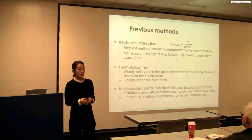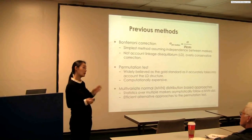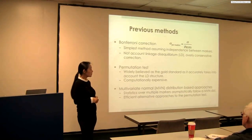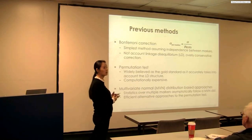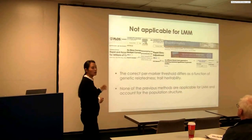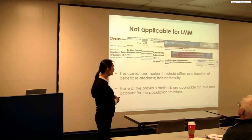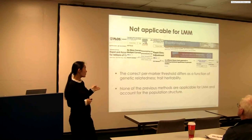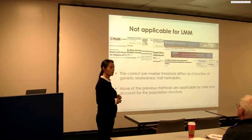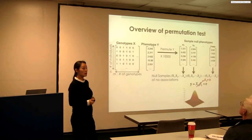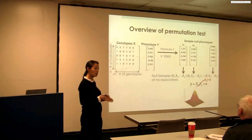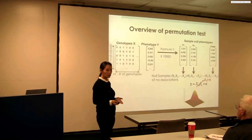The challenge of multiple testing in GWAS datasets is that many markers are correlated to each other. Typical approaches like Bonferroni correction are not applicable because they don't consider the LD structure in the data. The permutation test has been widely considered the gold standard in GWAS because it can accurately account for LD structure, but it's computationally very expensive. There are MVN-based (multivariate normal distribution) approaches that speed up this sampling process by directly sampling the statistics from the MVN. However, none of them account for the fact that the per-marker threshold differs as a function of genetic relatedness — none are applicable when population structure exists in the GWAS dataset.